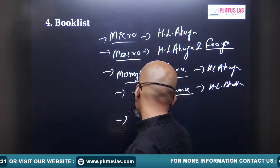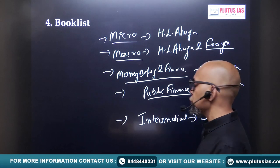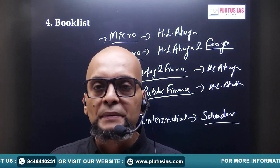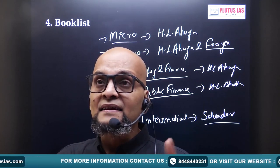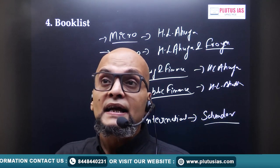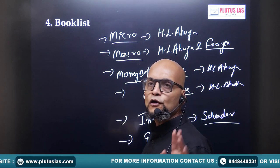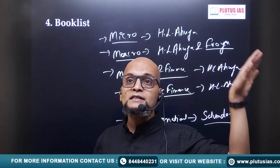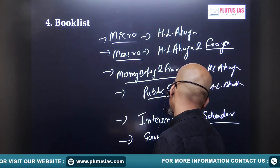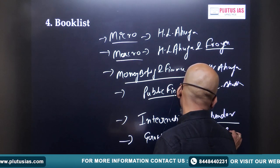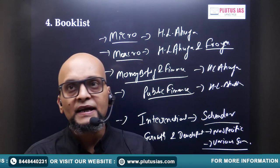For international economics, Salvador — it is actually the Bible of international economics. Reading this book will make your concepts and base absolutely clear. But the book is very thick. In my Plutus IAS notes, you will get the essence of Salvador plus detailed analysis in precise form. For growth and development, there is no particular book — you have to explore various sources from the internet and multiple books. However, we have a book of growth and development at Plutus IAS that will help you a lot.